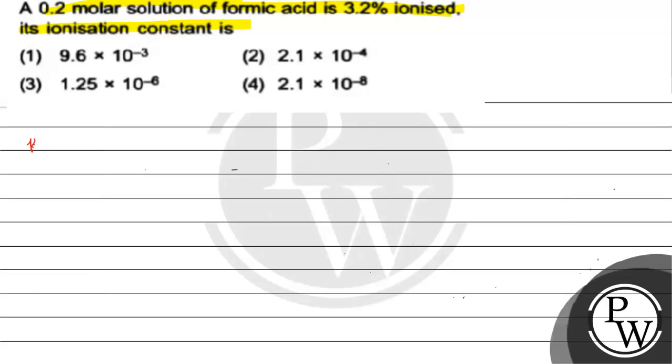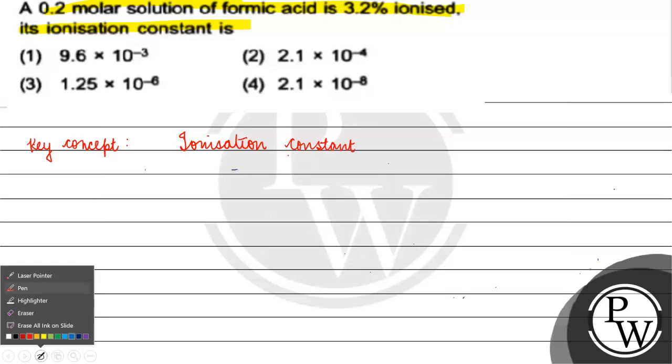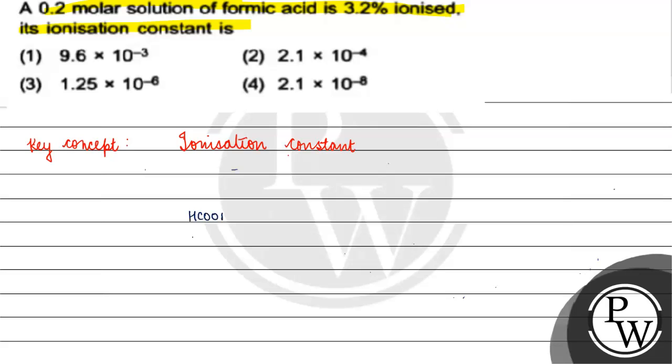The key concept for this question is ionization constant. When formic acid ionizes, HCOOH gives H⁺ and HCOO⁻.